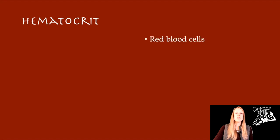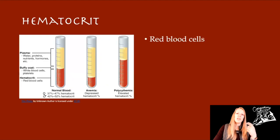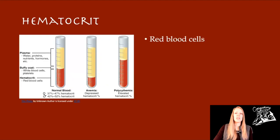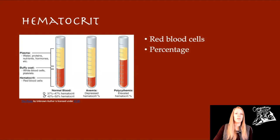Starting with hematocrit — this is simply the red blood cells. You know when you get your blood drawn and they take that vial, spin it and centrifuge it down, and you end up with some red and some yellow in there? Well, the red part is your hematocrit, and it's just a percentage of red blood cells in your blood.